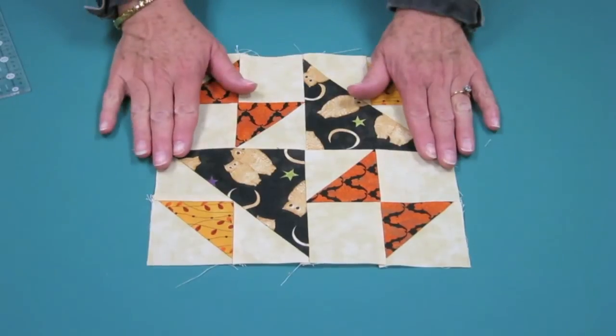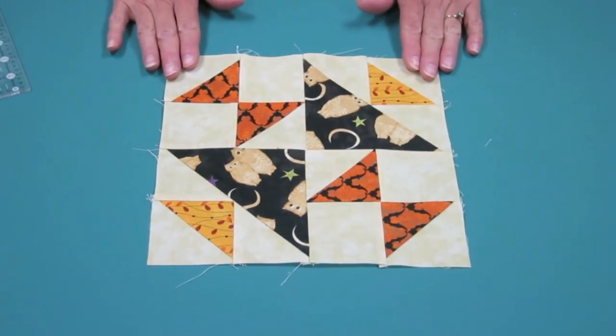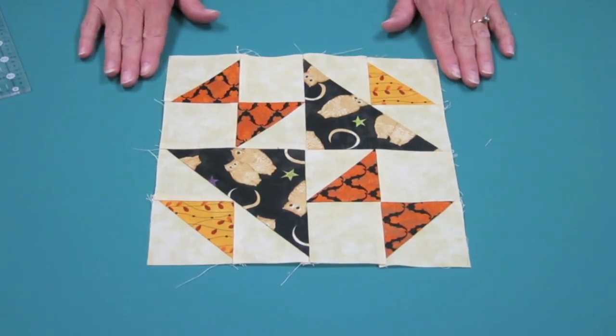Okay, so we have our block sewn together. Each one of these increments should measure five inches before you sew it into the block. When it's done, it should be nine and a half. We'll see you next week.